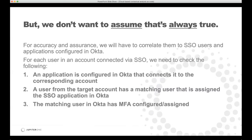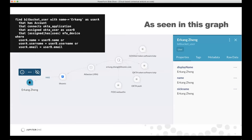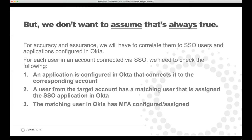What we end up doing is enriching the Bitbucket user entity with that property — to know that I am a single sign-on user and have MFA enabled — if this graph condition is met. But we also don't want to assume that's always true. We don't want to assume that because we're using Okta all of our users are going through this flow. So for accuracy and a level of assurance, we do some correlation using the graph: for each user we run a query to correlate whether they're an SSO user by checking if the application is assigned in Okta, the user has a matching email in the Okta application, and the Okta user has an MFA device configured.